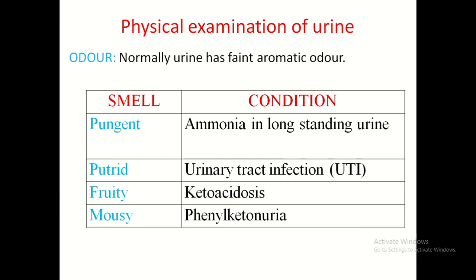Regarding the odour of urine, normally it has a faint aromatic odour. Pungent odour is due to ammonia in standing urine. Putrid odour is due to urinary infections. Fruity odour is due to ketoacidosis. And mousy odour is due to phenylketonuria.